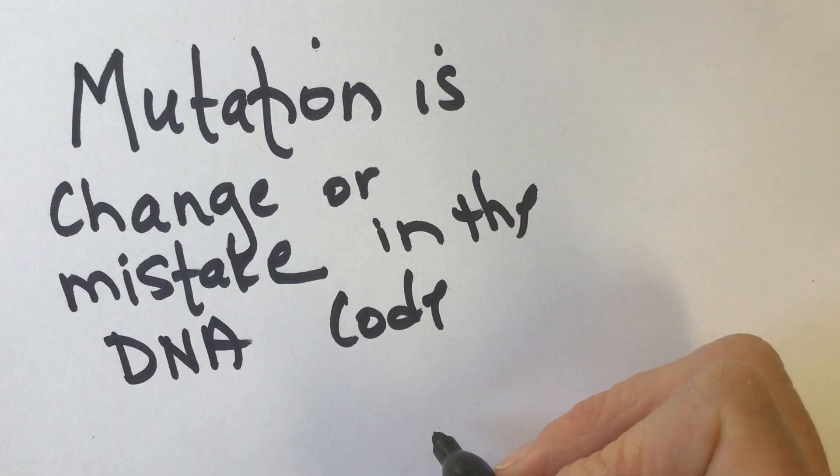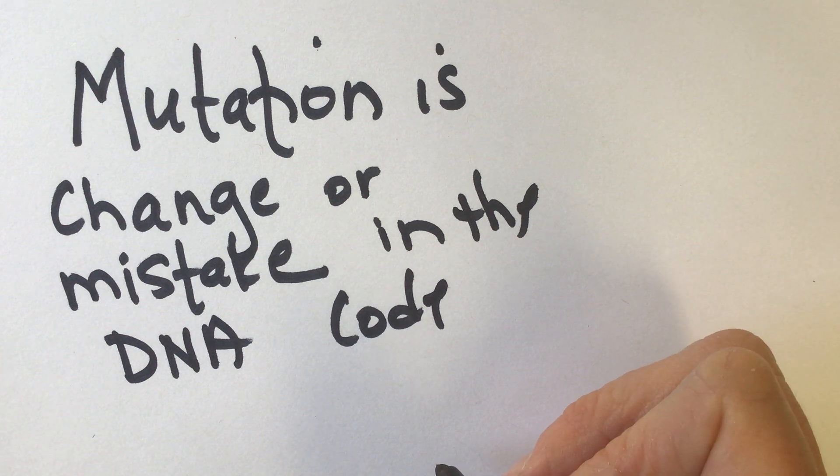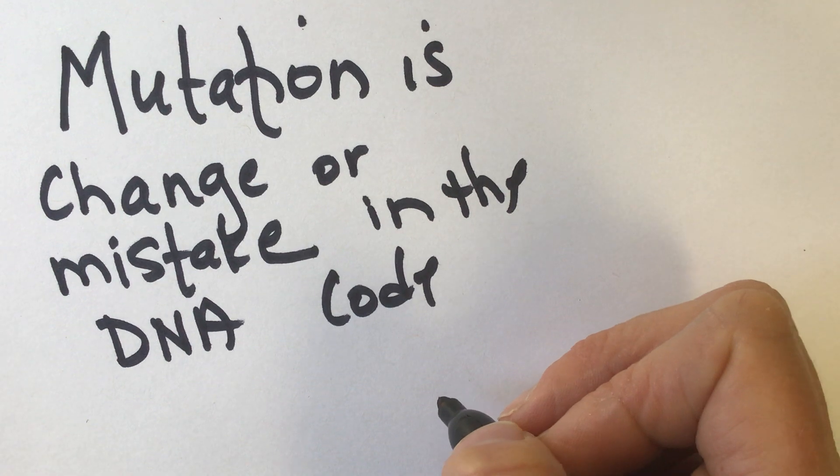A change or mistake in the DNA code. Now, so we're talking like a one-letter change, so one letter changes from A to C, and then that doesn't match with the T that's there. So that causes a different protein to be made, and that may not work.